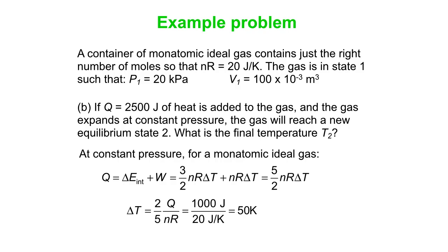I just rearranged that, two-fifths of Q over nR. Q is 2500, so two-fifths of Q is 1000. And then nR is 20. So the ∆T is 50, but we started at 100, so now we're up to 150 Kelvin.